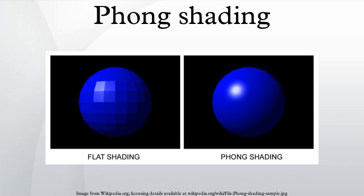Phong shading and the Phong Reflection Model were developed at the University of Utah by Bui Chuong Phong, who published them in his 1973 PhD dissertation. Phong's methods were considered radical at the time of their introduction, but have since become the de facto baseline shading method for many rendering applications, proven popular due to their generally efficient use of computation time per rendered pixel.